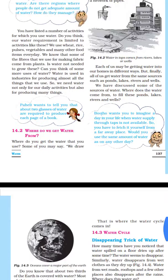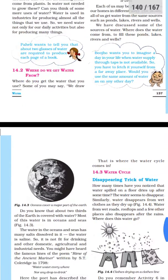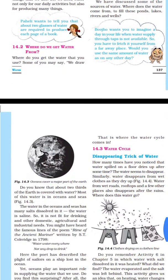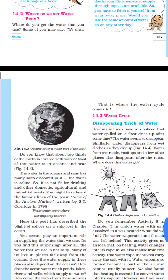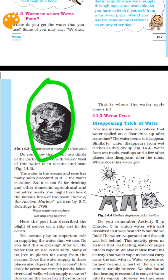In South India, the main source of water is rainfall. However, only about 17% of water is fresh water — the rest is salty water from the oceans.